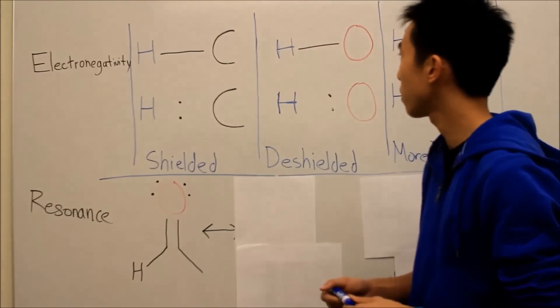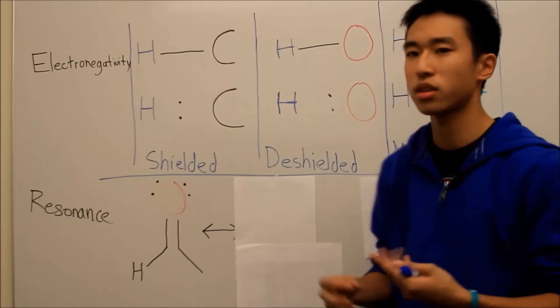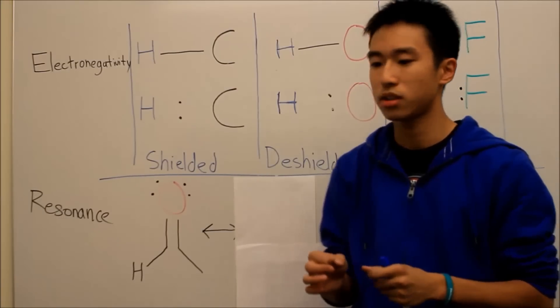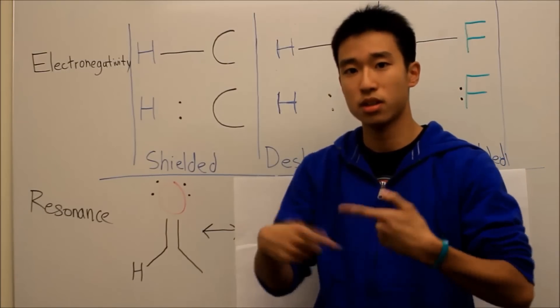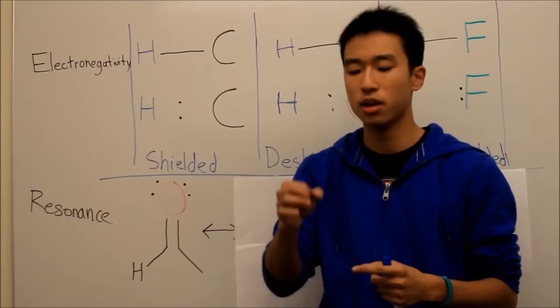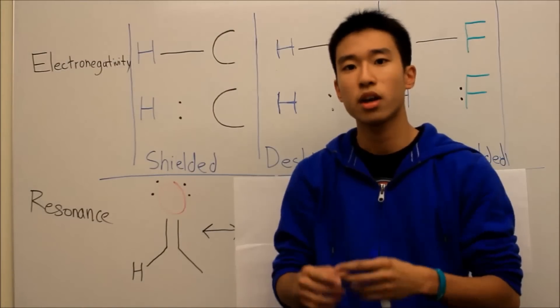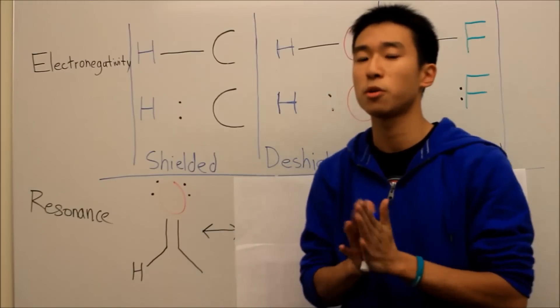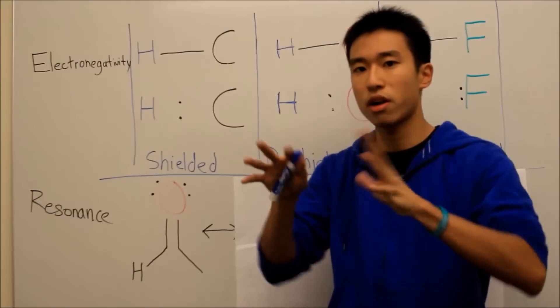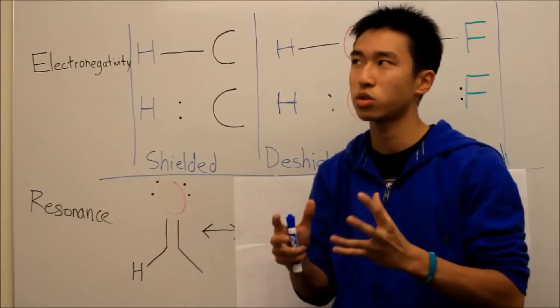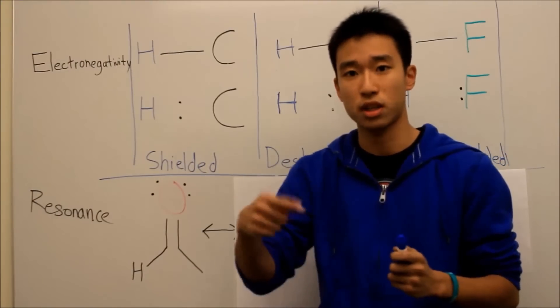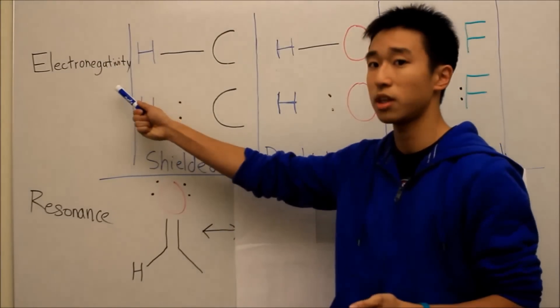So the first thing I want to talk about is NMRs, like how it all works. So basically what happens is protons have a spin, and then when they are put in an electromagnetic field, their spin is going to change. And that change is called a shift. So the electrons around them kind of form a shield or like an orb around them, and it protects them from shifting. One of the factors that affects shielding is electronegativity.